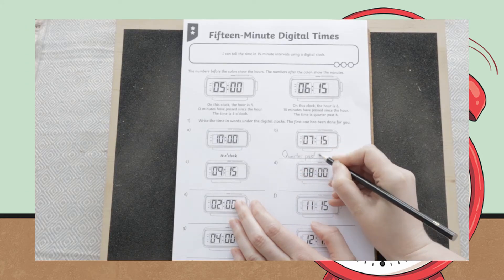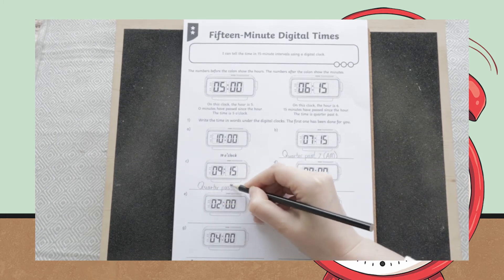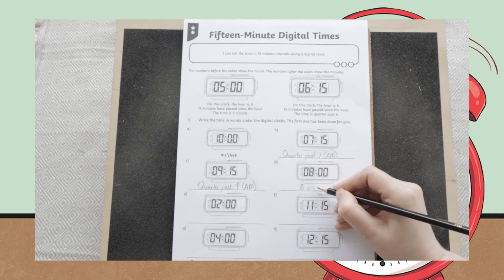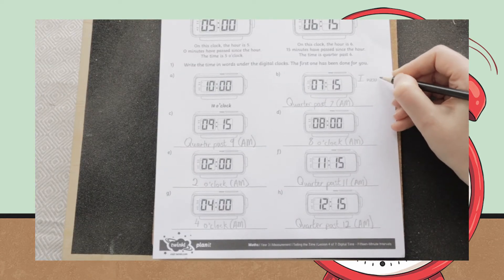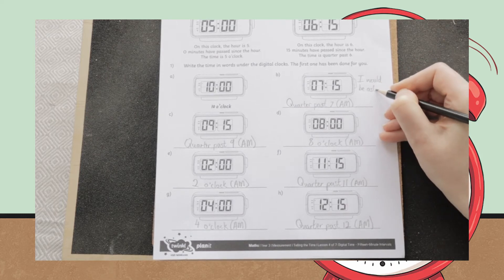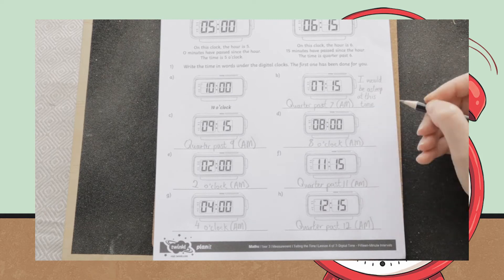To extend the activities further, ask children to identify whether the times are a.m. or p.m., or ask them to write sentences explaining what they usually do at these times. This helps pupils to link these times to day-to-day routines.